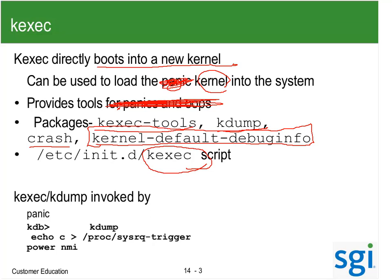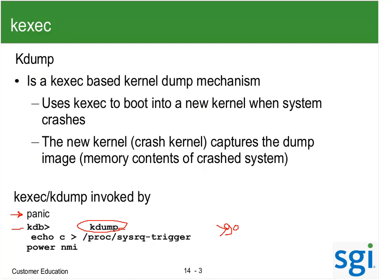KExec and KDump are invoked by a panic. If we're at the KDB prompt, we can do a KDump to get a dump. If I'm in KDB and type 'go', that can also give me a dump or bring me back to the live system. I can also echo a C into /proc/sysrq-trigger, or use a Power NMI — so there are five different ways to invoke a dump. Unfortunately, PERF top has blocked and masked all NMI capability and escaped KDB, so when we hit PERF top, only UV dump will work.